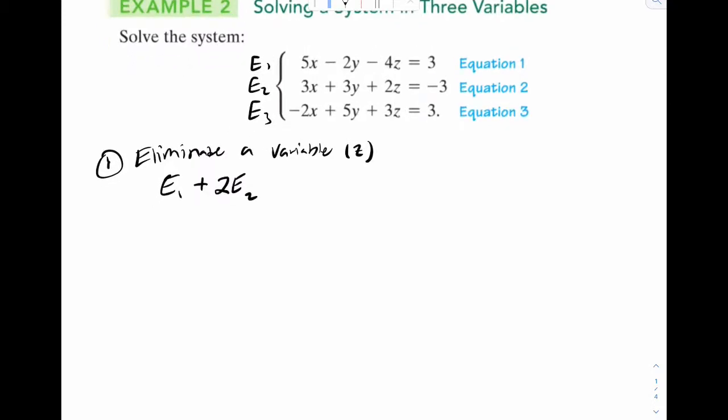So you're going to write that 2E2, and then we're going to add them. So that's going to help me look at your work and also help you stay organized. So I'm going to rewrite equation one. I'm going to write 2E2. That would be 6x plus 6y plus 4z equals negative six. Now we add. And of course, notice that they get eliminated right here. This is gone. So now we get 11x plus 4y. That's negative three. We will label this one equation four.